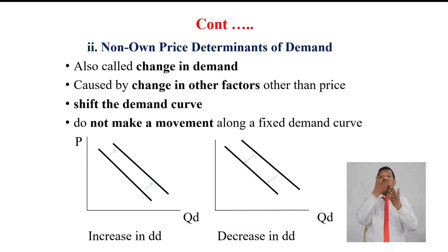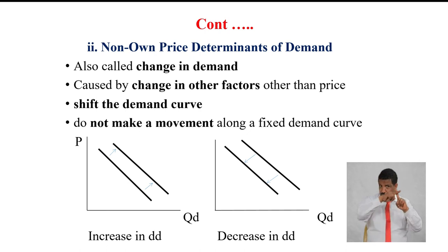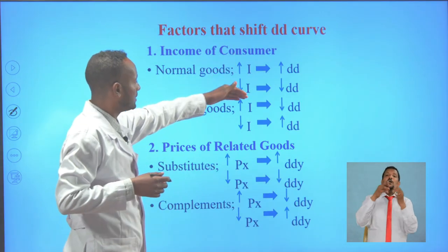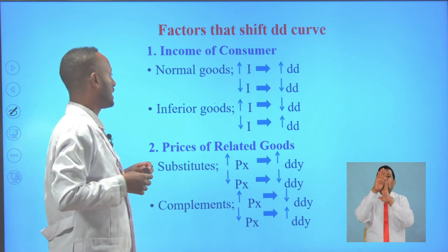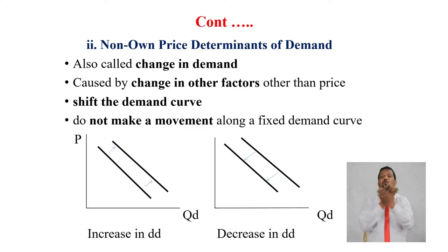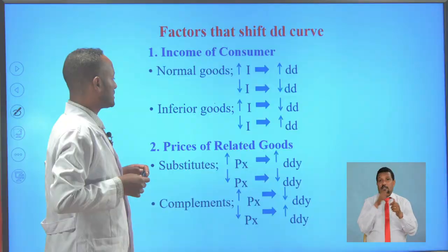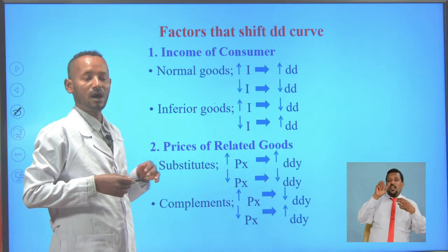In terms of income, goods are classified as normal goods or inferior goods. Normal goods have a positive income effect — as income increases, demand for normal goods increases, and as income declines, demand declines. Inferior goods have a negative income effect — as income increases, demand for inferior goods declines, and as income declines, demand increases. There is an inverse relationship between income changes and demand for inferior goods.